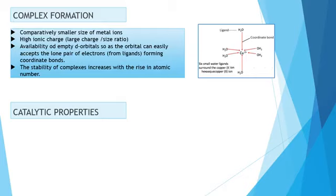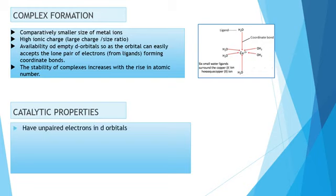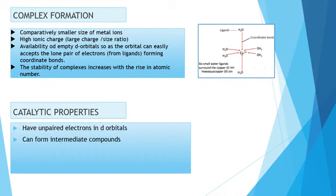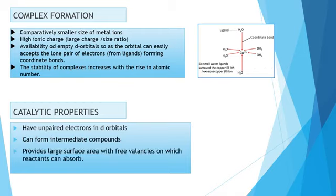Catalytic property: transition metals have unpaired electrons and D orbitals that help in forming products from reactants without getting involved in the reaction — this is catalysis. The transition metal forms intermediates, and these intermediate compounds bring products and reactants closer. This is possible because the unpaired D orbital electrons provide a surface for both reactants and products. With free valences, reactants are absorbed and products can easily form, speeding up the reaction.